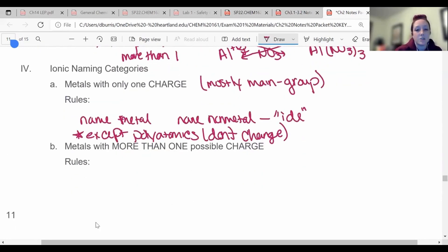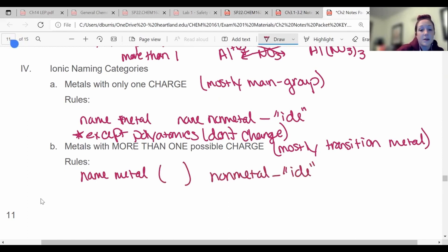Now metals with more than one possible charge, for the most part, these are mostly transition metals. So the ones in the middle can have different charges. So they need something extra. So this is how you name these. You still name your metal. And then I'm going to put parentheses here. We need a little something extra. And then at the end, you're going to name your nonmetal. Again, IDE ending unless it's a polyatomic ion. And what we're going to put right here in parentheses is a Roman numeral that tells us what the charge is. So if it has a charge of plus two, it's going to have a Roman numeral of two.